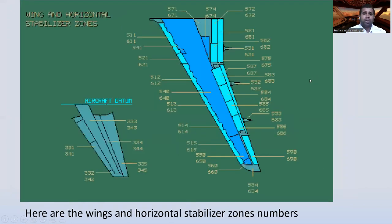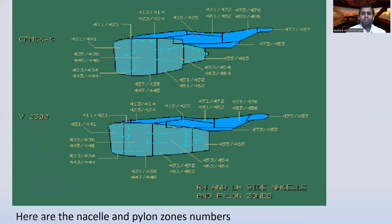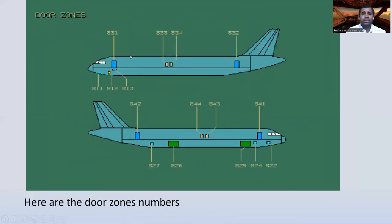Here are the wings and horizontal stabilizer zone numbers. For the left side, zones start with 500, and for the right side, 600. Zone 541 is also shown. For nacelles and pylon zone numbers: 411 and 431 are for the left side, and 441 is for the right side — this applies to the CFM56-5 engine. For door zones: 831 and 833 are left-side doors, and 842, 841, and 843 are right-side doors.